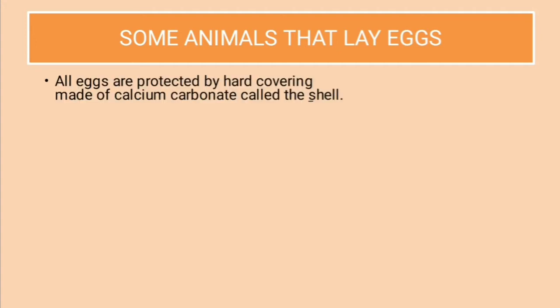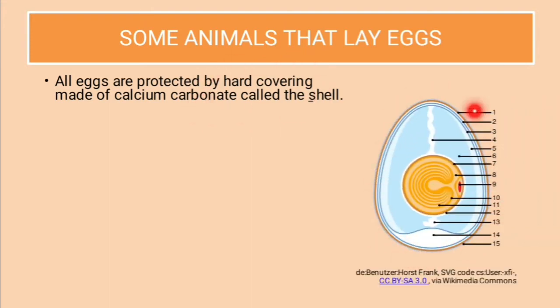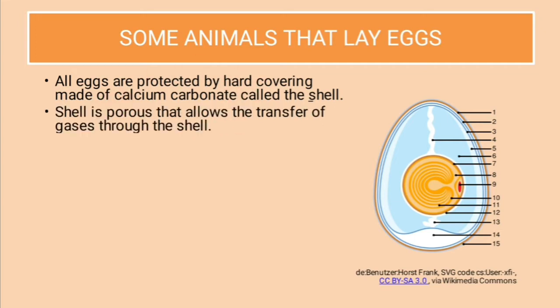All the eggs are protected by a hard covering made up of calcium carbonate. The covering of the egg is made up of a hard shell which is made up of calcium carbonate. The shell is porous and allows the transfer of gases through it. You might feel that it is quite hard, but it doesn't mean that it doesn't allow anything to go inside. There are tiny pores on the shell which allow the gases to pass through, and these tiny pores cannot be seen with our naked eyes.